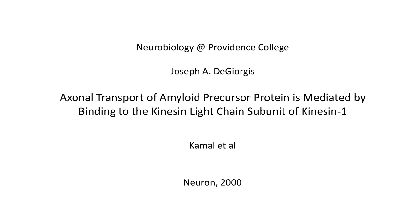The first paper we're going to look at is by Kamal et al, titled 'Axonal Transport of Amyloid Precursor Protein is Mediated by Direct Binding to the Kinesin Light Chain Subunit of Kinesin 1.' This paper suggests that the amyloid precursor protein may serve as a trailer hitch to link kinesin to its cargo, the vesicle. That's interesting for two reasons: we've said many times that there's no known function for amyloid precursor protein, and this paper assigns a function to APP and also implicates kinesin in Alzheimer's disease.